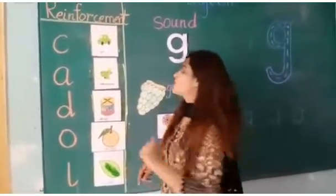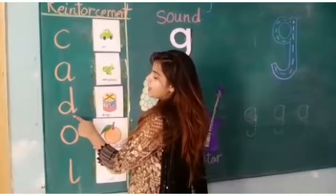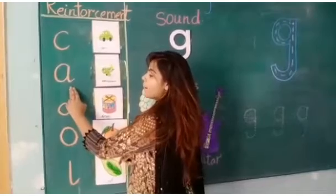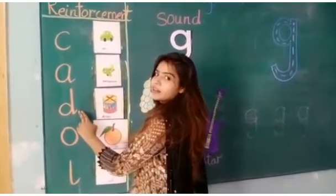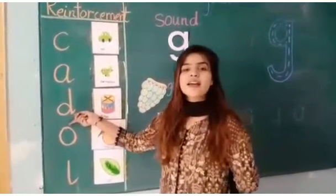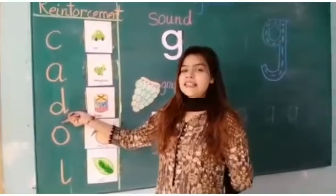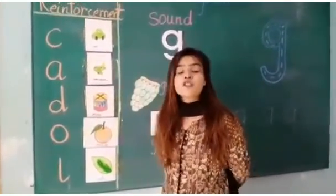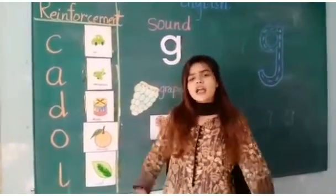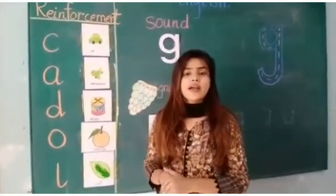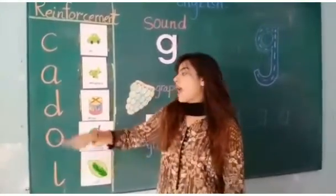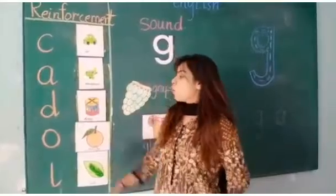Now let's move towards the third sound. Duh. Which sound is this, kids? It is duh. And of course, it's making a tick — go up, come down and make a tick. This is sound duh which wears a diaper. Do you all remember? I have told you in the previous video that the sound duh is a cute little baby boy who wears a diaper. Well done.